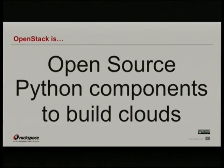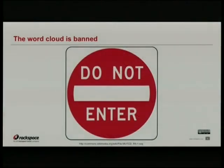OpenStack is an attempt to provide open source Python components to build clouds. These are the important concepts: we believe in open source and open governance. It's almost all written in Python — there's a little bit of JavaScript and shell, but it's almost all in Python. And these are building blocks. We don't necessarily expect you to use all of them. We do expect them to plug together well and that sort of thing. But that totally doesn't help either, right? Because what's a cloud?